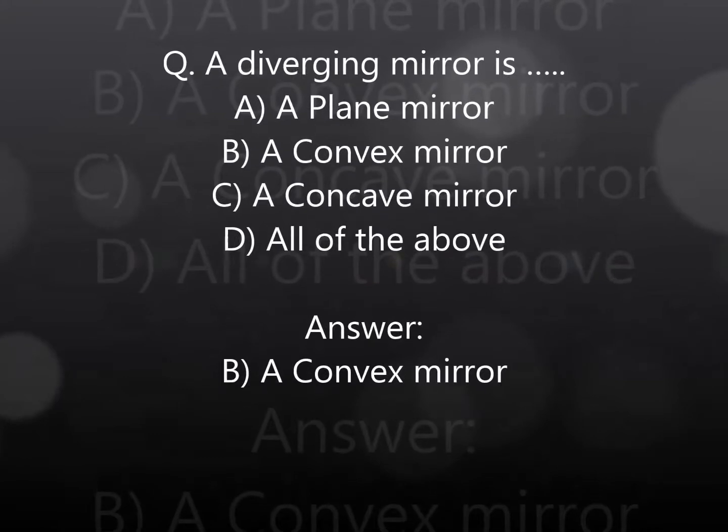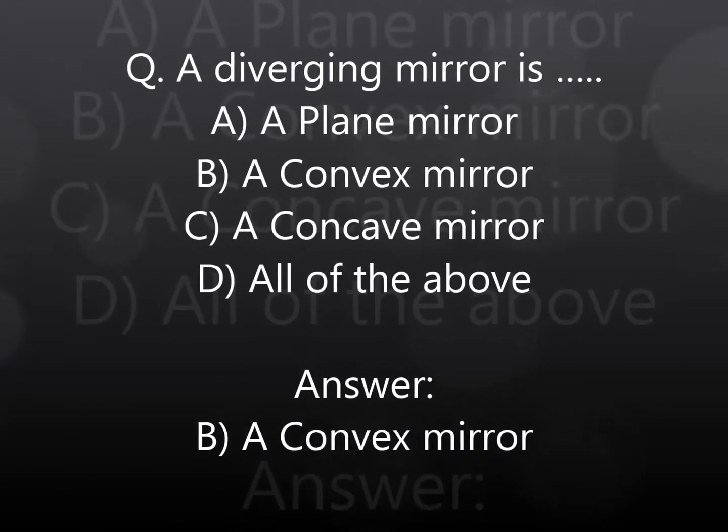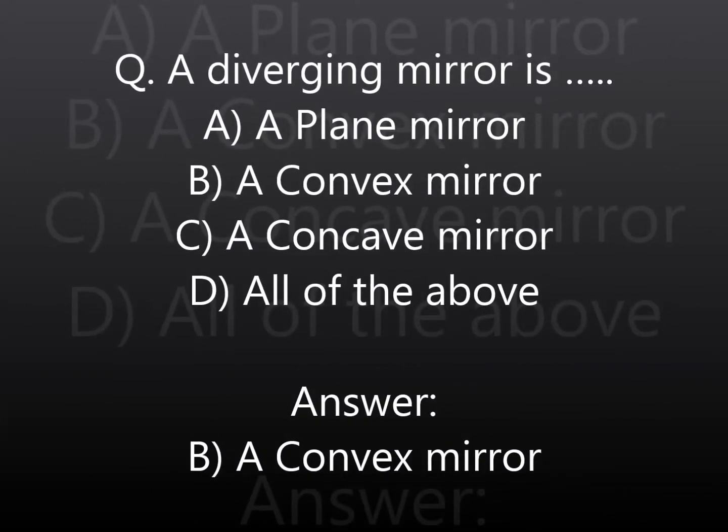A diverging mirror is: A. A plane mirror, B. A convex mirror, C. A concave mirror, D. All of the above. Answer: B. A convex mirror.